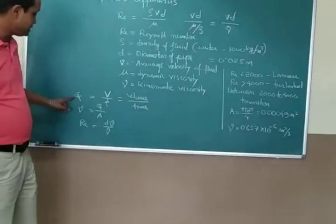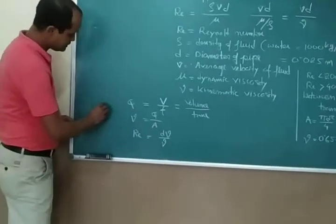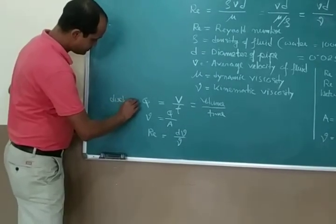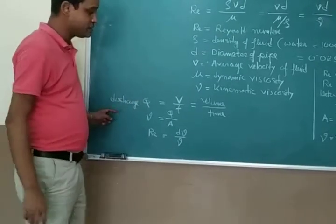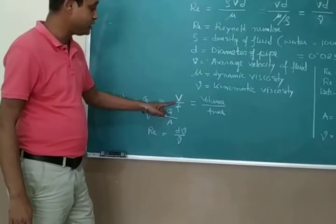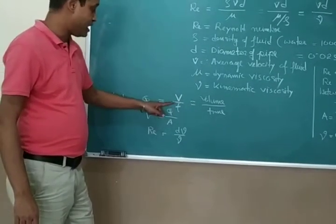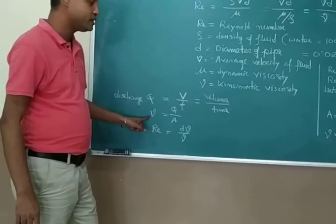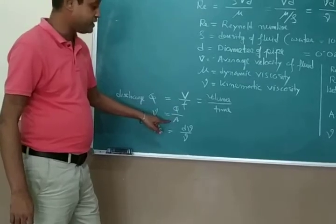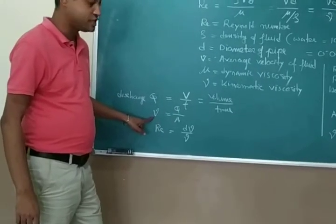Let's start with the calculation. Here we have to find out the discharge. To find out the volume of discharge, we require volume and time. We have to find out the volume of water with respect to time. After finding the discharge, we can easily find out the average velocity.